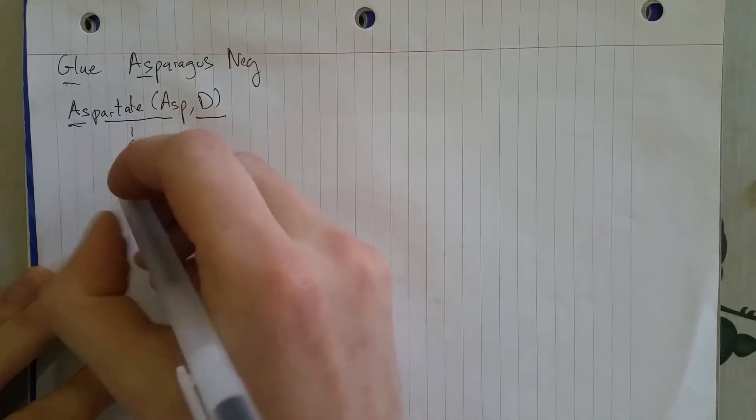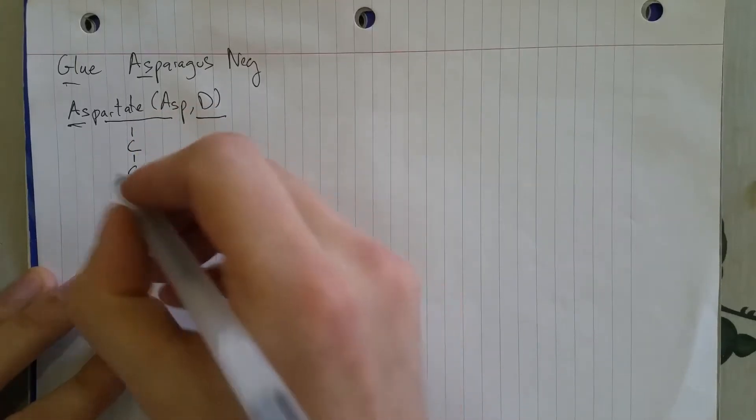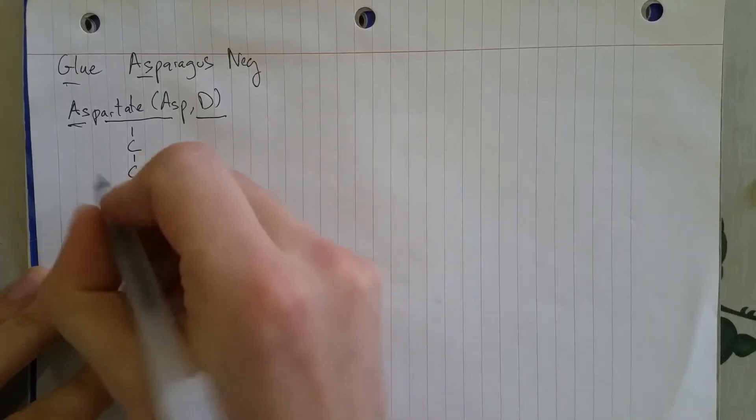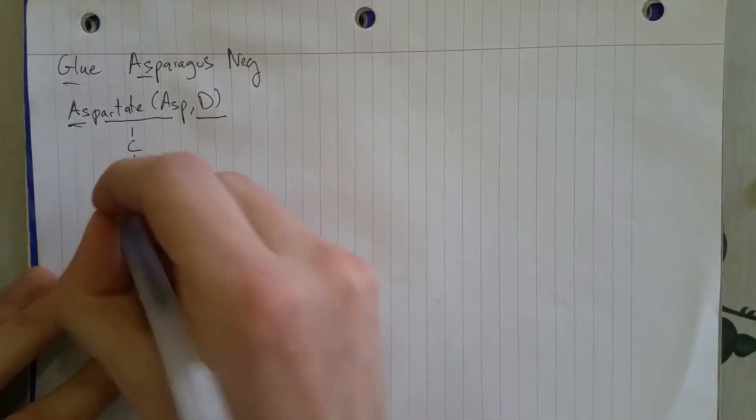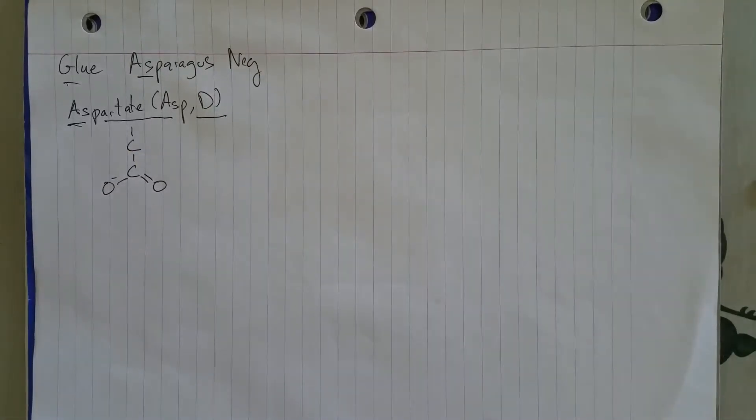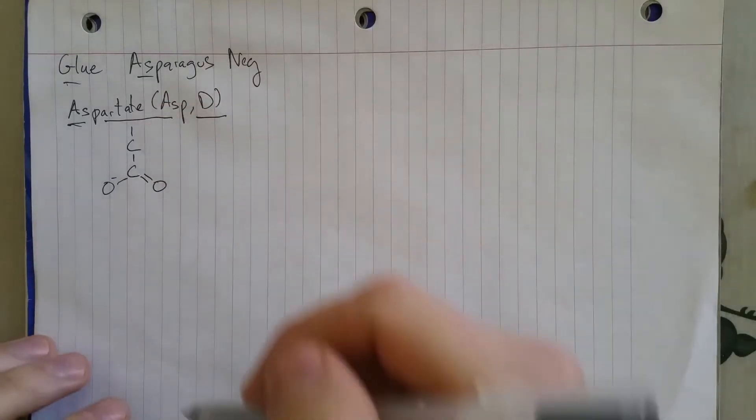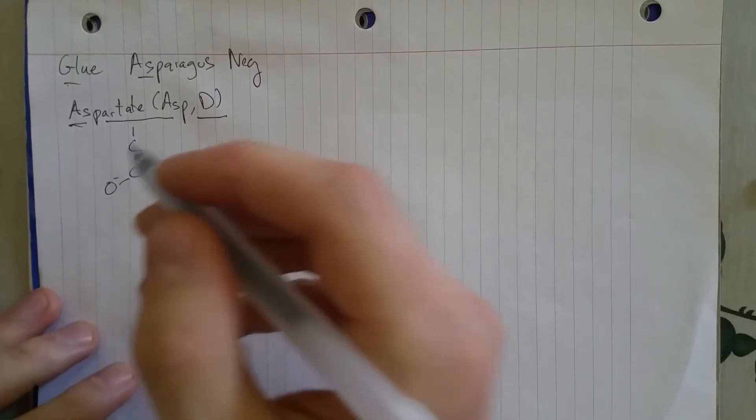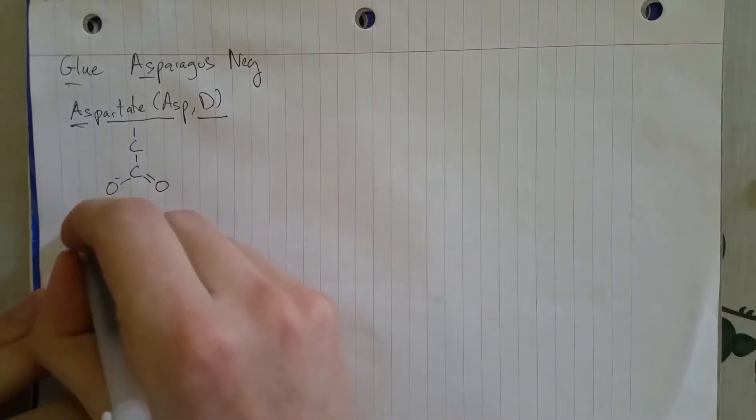So it's basically just, you got your beta carbon, and then you've got this carboxyl group on. You need a carboxyl group to make it acidic, make it negatively charged, and you just attach that to your beta carbon. So, it's basically as simple as you can get.